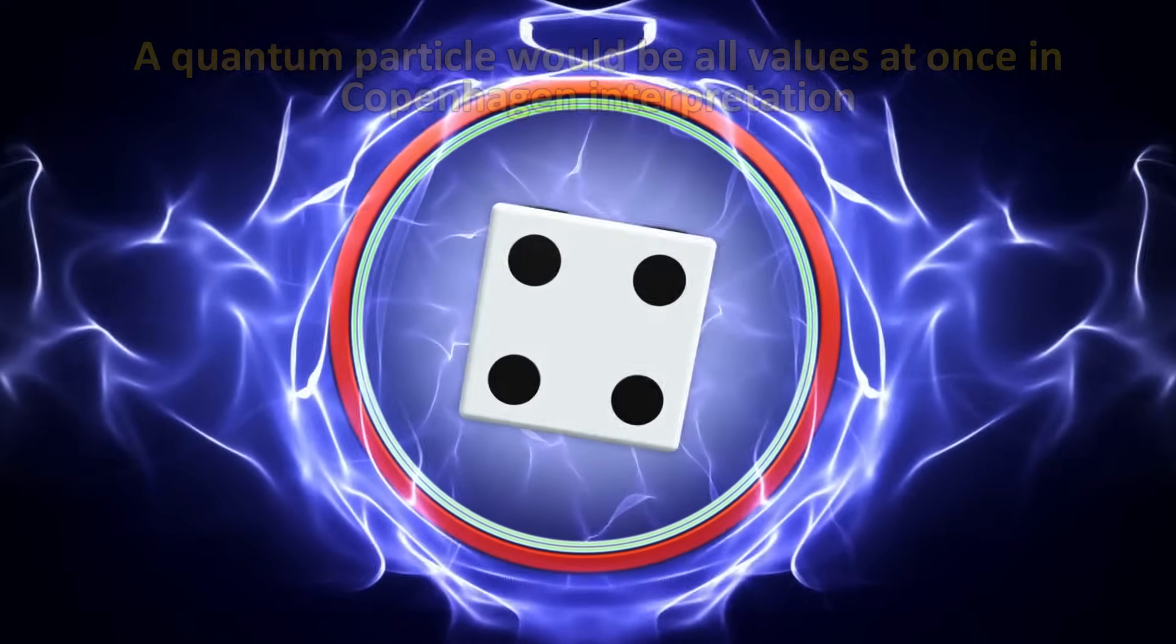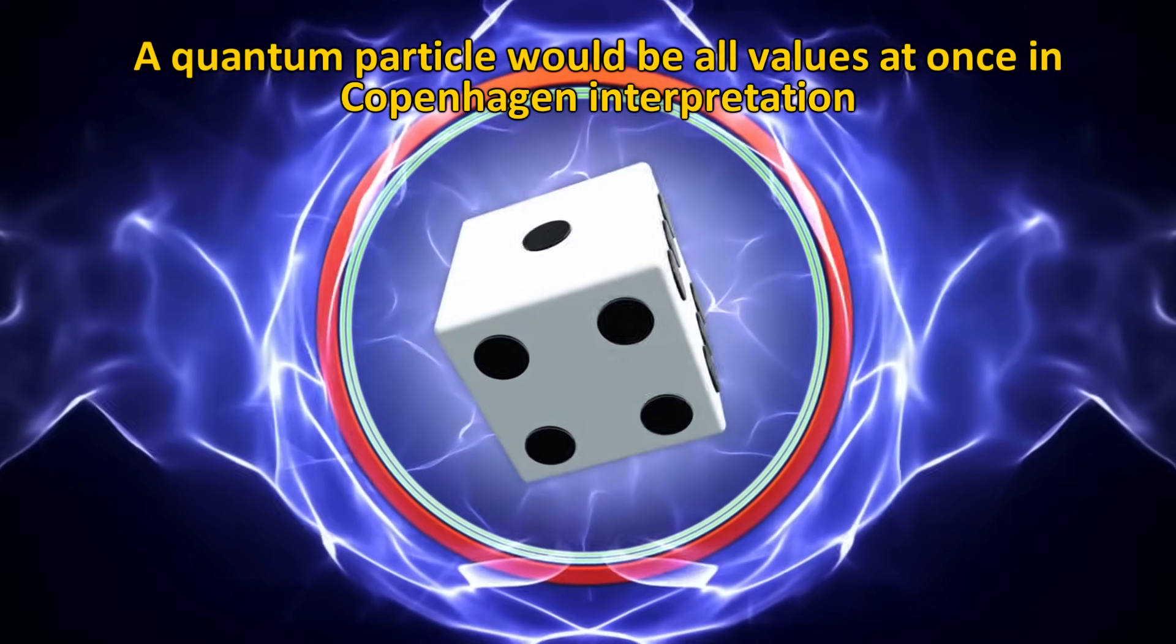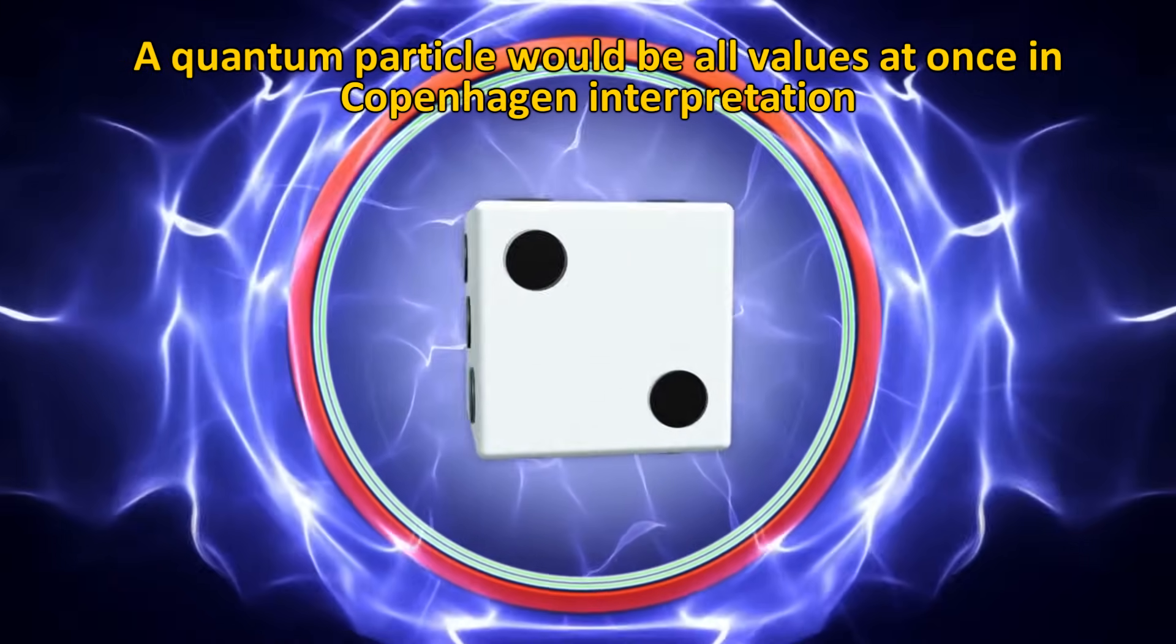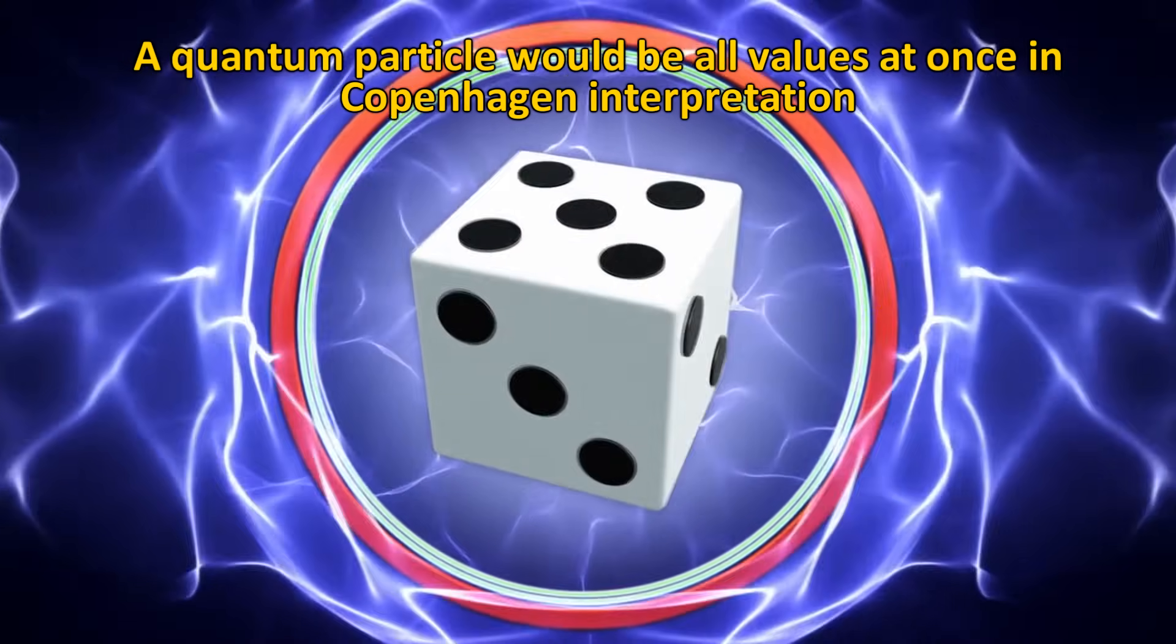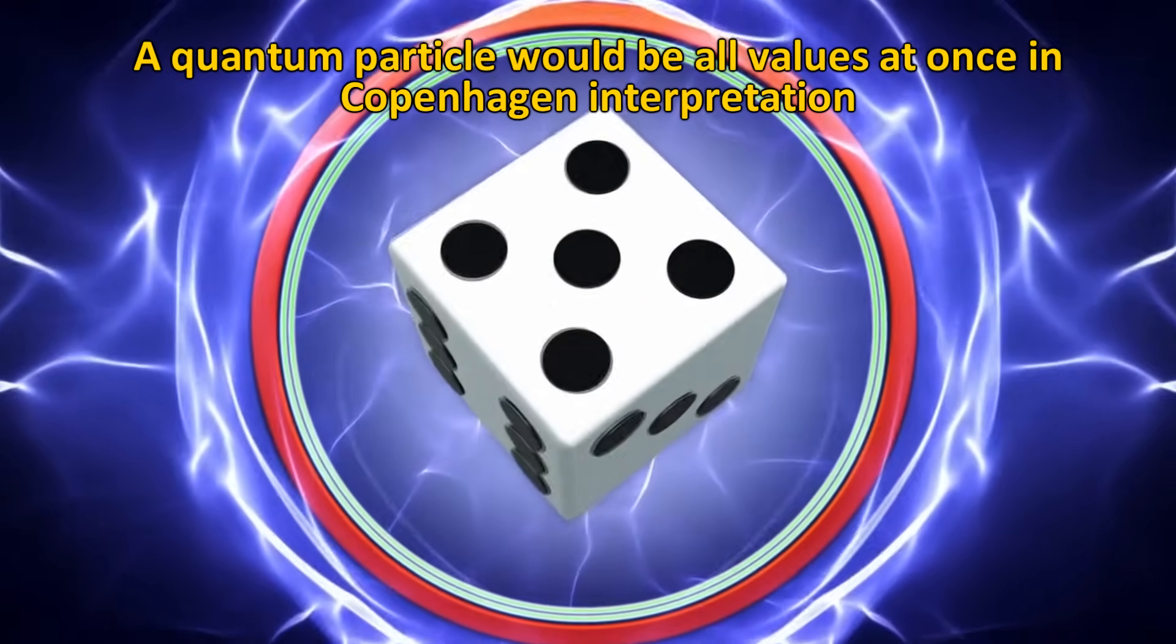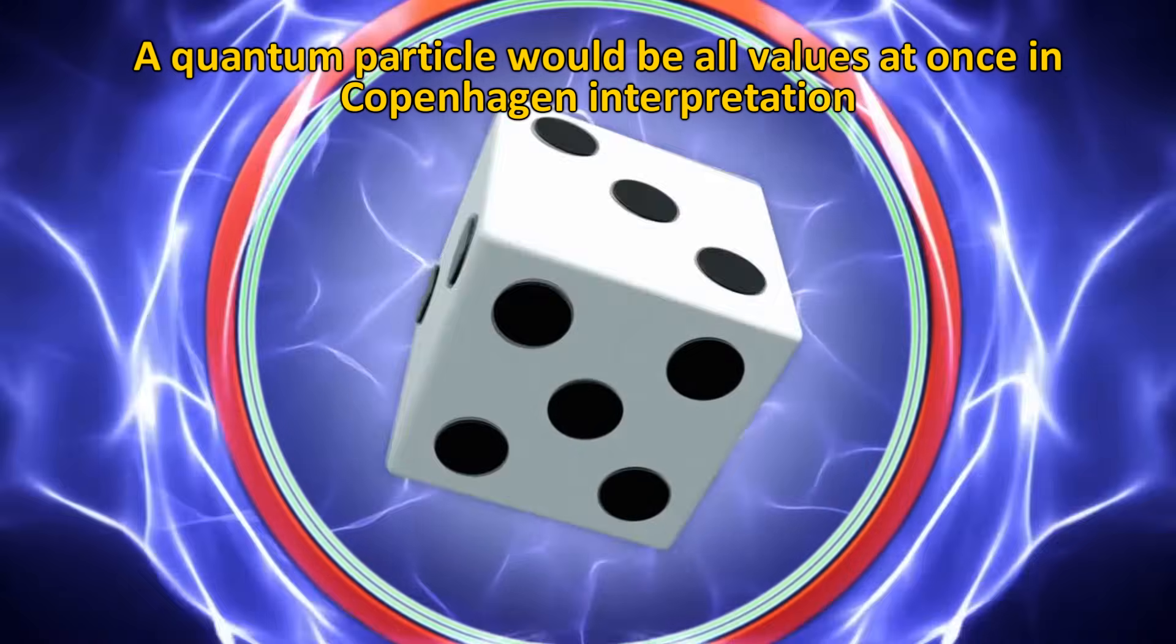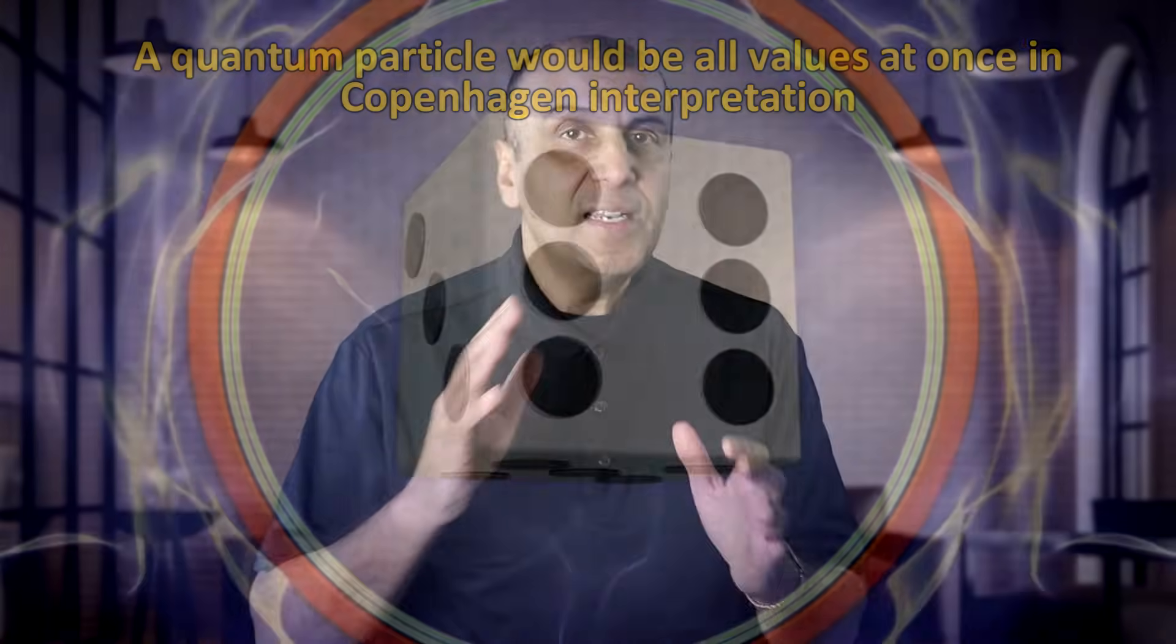According to the most accepted interpretation of quantum mechanics, the Copenhagen interpretation pioneered by Niels Bohr and Werner Heisenberg, it's not only that the dice's value is not known, but that it is all values at once. Its value can only be known once it is measured. The double slit experiment demonstrates this.